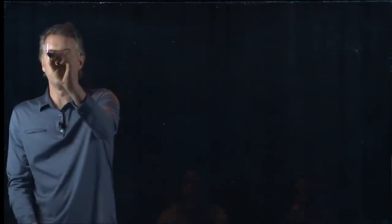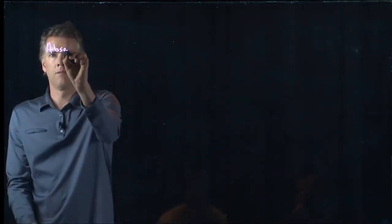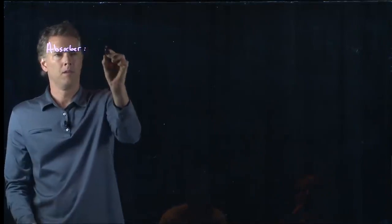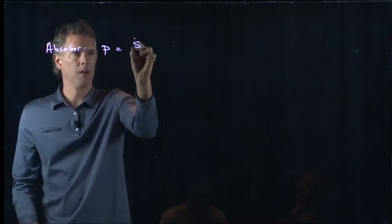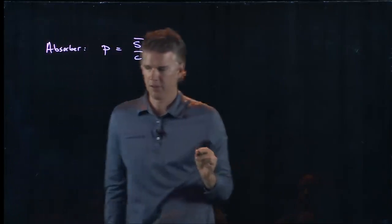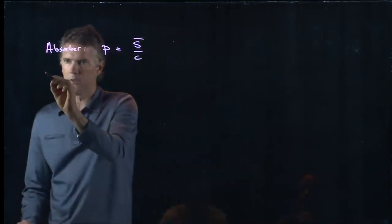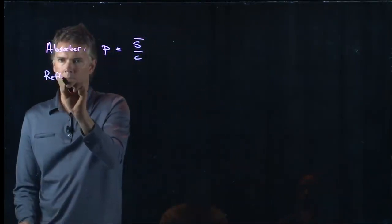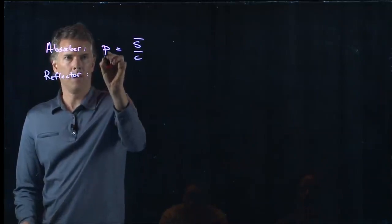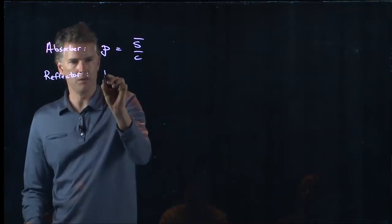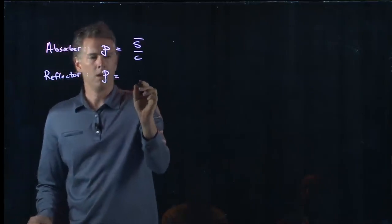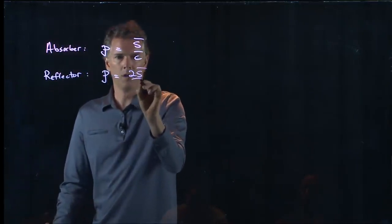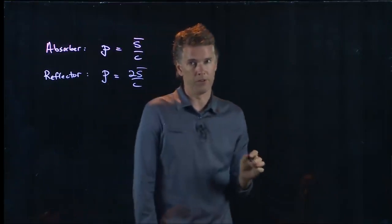where S bar is our average intensity. So for an absorber, P is just S bar over C. For a reflector, and this is supposed to be capital P, pressure, is 2 S bar over C.